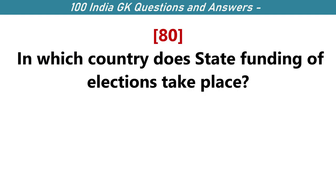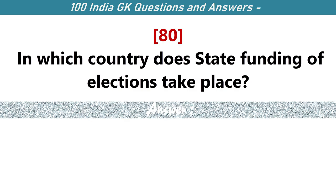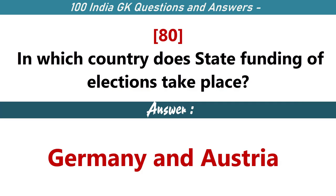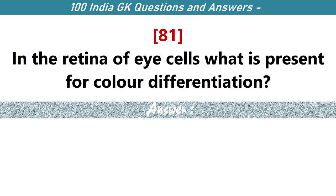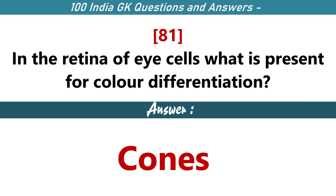In which country does state funding of elections take place? Germany and Austria. In the retina of the eye, what is present for color differentiation? Cones.